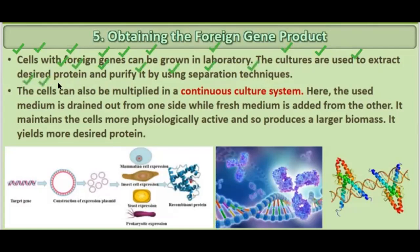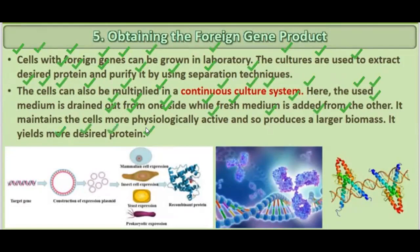The cells can also be multiplied in a continuous culture system, where the used medium is drained out from one side while fresh medium is added from the other. This maintains the cells in a more physiologically active state, produces a larger biomass, and yields more of the desired protein.